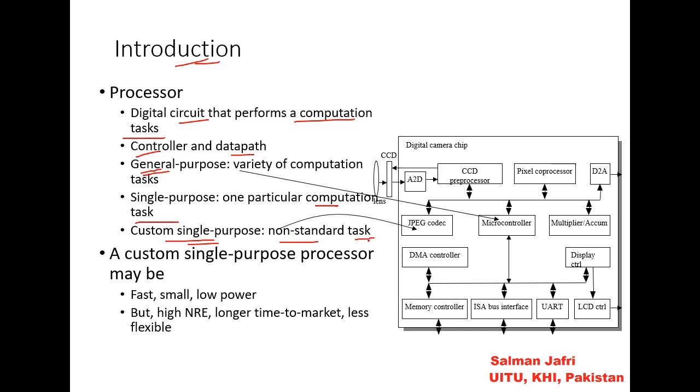If you have some special task that is not a standard task, for example, if USB 3 was available, you want to develop your own standard USB 5, the USB 5 would be your custom single-purpose design because it is not available. A custom single-purpose processor may be fast, small, low power, but high NRE and longer time to market and less flexible. This is an example of a non-standard task if JPEG codec is not available.